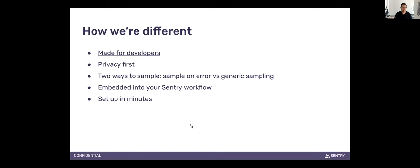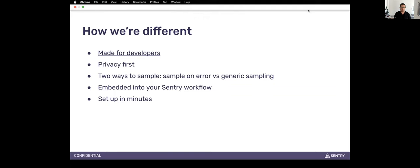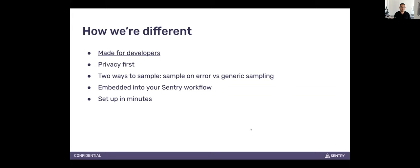We have a couple of ways of sampling — another unique factor for us. You can say, hey, we just launched this new feature and we want to sample all sessions, capturing a replay whether an error happened or not. But our huge value-add is that we can sample up to 100% on errors — this is configurable at the SDK level. You can say anytime an error occurs, I want to capture a session replay. And then you get it from the whole Sentry point of view — you go right from your issues to replays and vice versa. It's set up in a couple of minutes.